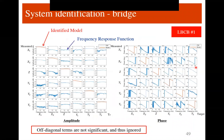I then needed to system-identify the LBCBs. Each LBCB has six channels; amplitude and phase curves are shown. The off-diagonal terms representing inter-actuator coupling are considerably smaller than the on-diagonal terms — so coupling is negligible. This is a byproduct of working in actuator coordinates. I therefore only system-identified the on-diagonal terms.